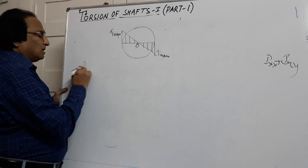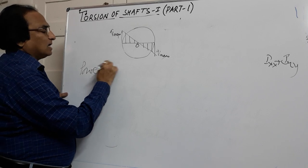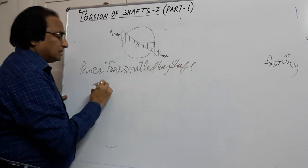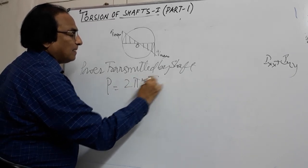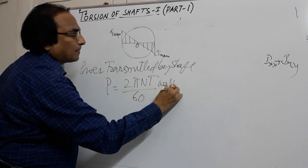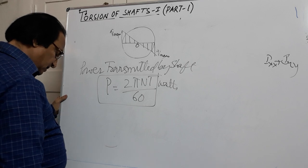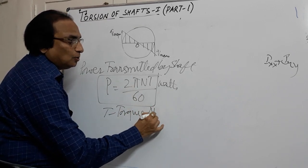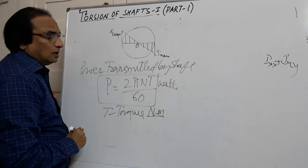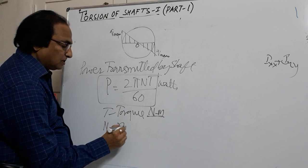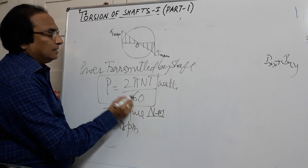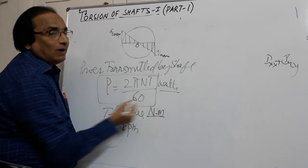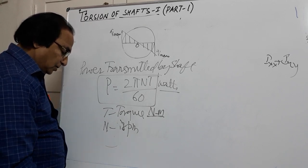Shafts are generally used for power transmission. Power transmitted by a shaft is given by: P = 2πNT / 60 watts, where T is the torque in newton-meters and N is the number of revolutions per minute (RPM). When you substitute T in newton-meters, the power comes out in watts. Remember this formula — knowing these formulas allows you to solve the problems.